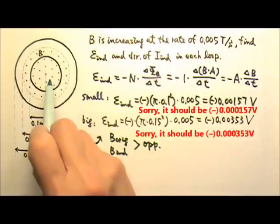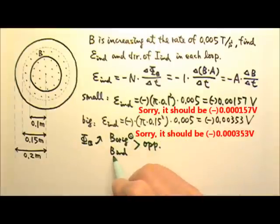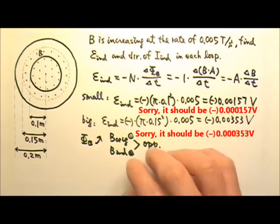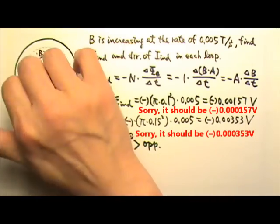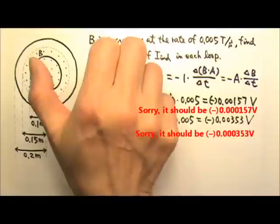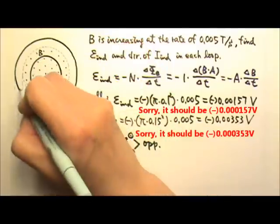The original magnetic field, those dots coming out of the paper. So the induced current magnetic field must go into the page. And this is true for both wire loops. So if we want the magnetic field inside the wire loop to go into the page, the current must go clockwise. So the induced current is clockwise for both.